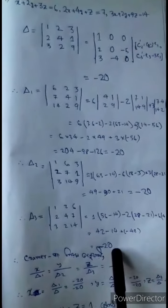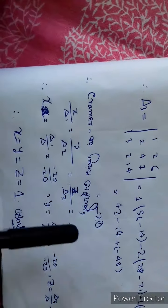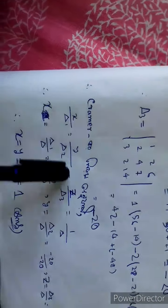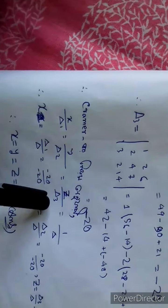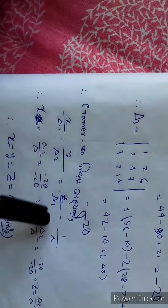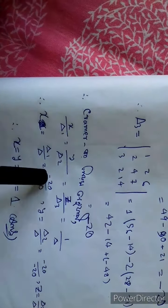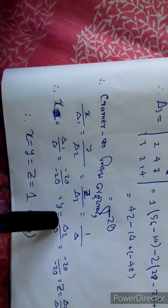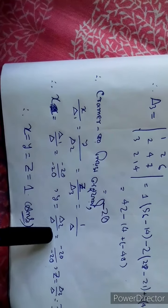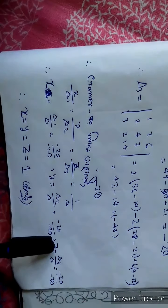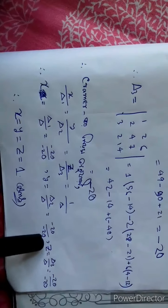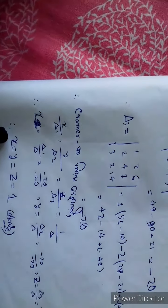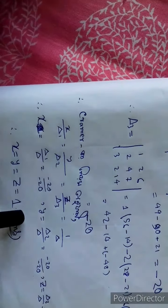Now applying Cramer's Rule: x by del_1, y by del_2 equals z by del_3 equals 1 by del. So x equals del_1 by del equals minus 20 by minus 20. y equals del_2 by del equals minus 20 by minus 20. z equals del_3 by del equals minus 20 by minus 20. Therefore, x equals y equals z equals 1.